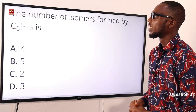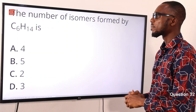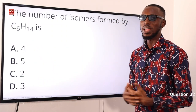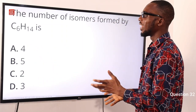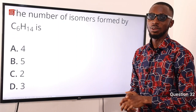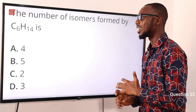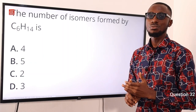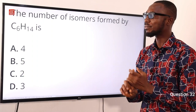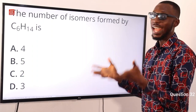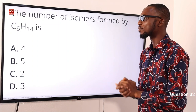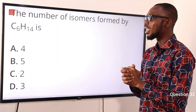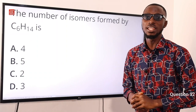Question 32: The number of isomers formed by hexane is what? Hexane belongs to the alkane family CₙH₂ₙ₊₂. Its isomers are: n-hexane, 2-methylpentane, 3-methylpentane, 2,2-dimethylbutane, and 2,3-dimethylbutane — that makes five isomers. So the correct option is option B — the number of isomers formed by hexane is five.